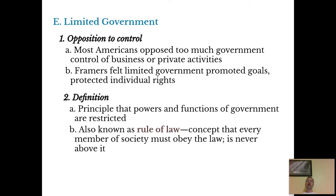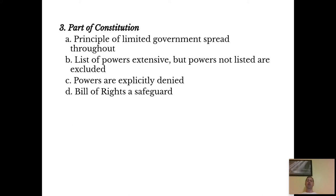Another principle found in the constitution is the idea of limited government. Whenever we were under the control of England, we thought the central government had way too much power. Then the Articles of Confederation gave states too much power. We were trying to find that balance, and that's what we have here with limited government — we give the government some power, but not all the power. With limited government, there's also the idea of the rule of law — that everyone has to follow the law. Where is limited government found in the constitution? All over. We're going to see it in Article 1, Section 8, Section 9, and Section 10.